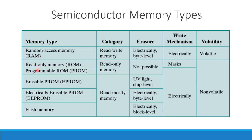The next memory type is ROM — Read Only Memory. The category is read only. Data is written once and is permanent. The writing method is the mask method. PROM means Programmable ROM — it is read only and erasing is not possible; you can program it only once.